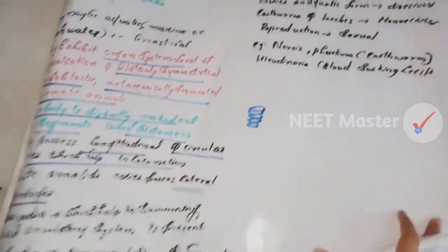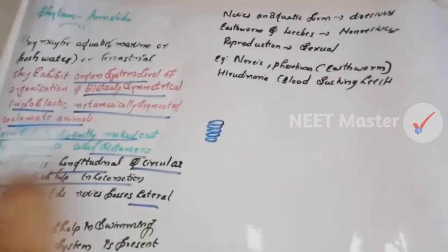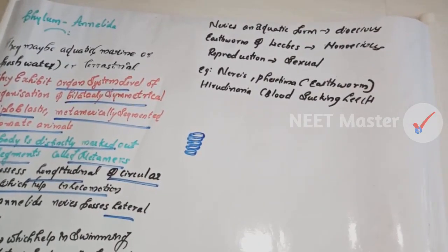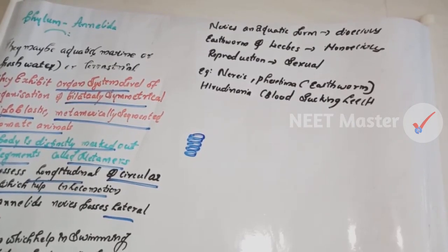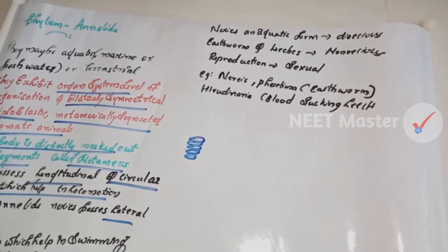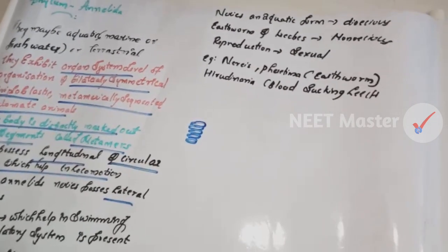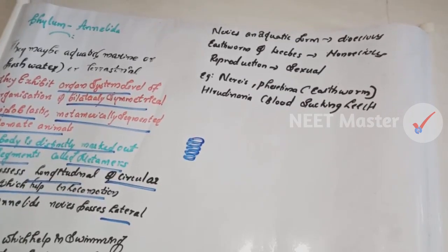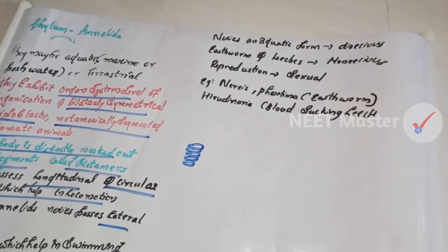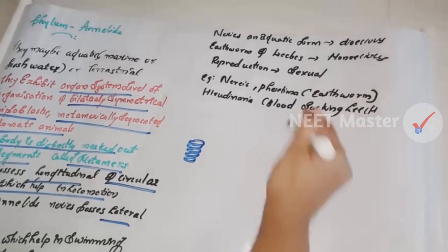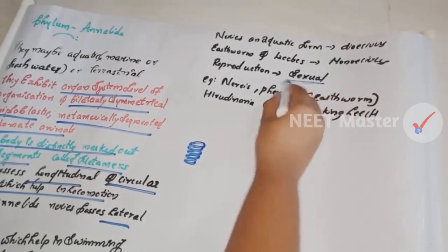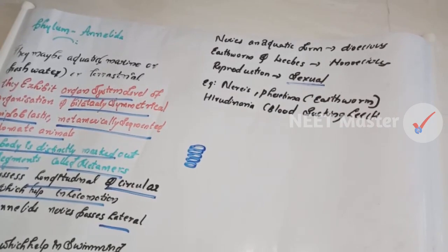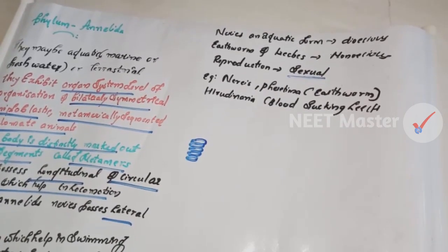Nephridia help in osmoregulation and excretion. The neural system consists of paired ganglia connected by lateral nerves to a double ventral nerve cord. Nereis is an aquatic form and is dioecious — sexes are separate. Earthworms are monoecious — hermaphrodites.